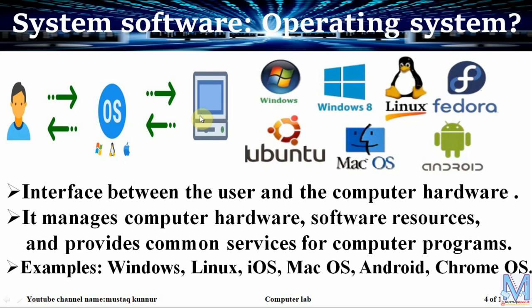The operating system is used to manage the computer hardware and software resources, and it provides common services for computer programs. Whenever we buy a new computer or cell phone, we must install an operating system. Without it, we cannot install any other application program. Hence, the operating system sits at the top of the software hierarchy.